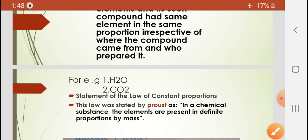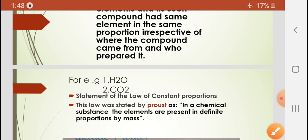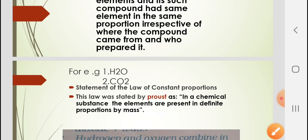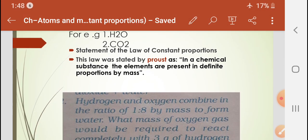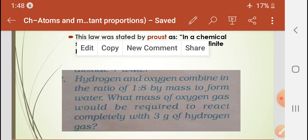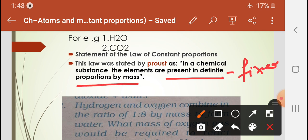According to the statement of the Law of Constant Proportions: in a chemical substance, elements are present in definite proportion by mass. 'Definite' means fixed, and 'proportion' means amount.